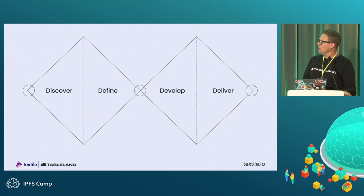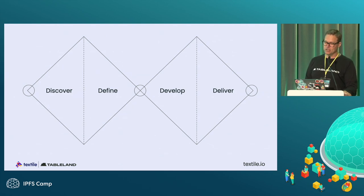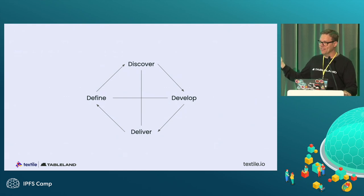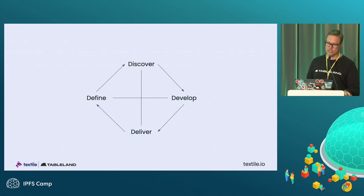So I'm a designer. The design process often goes something like this — this is the double diamond process as defined by the UK Design Council. It's a great framework, but fairly rigid and sometimes unrealistic. The real world doesn't quite work that way, especially at Textile where we often work in really tight loops. We're always shipping, and this design process is kind of flipping back and forth with a bit of tension.